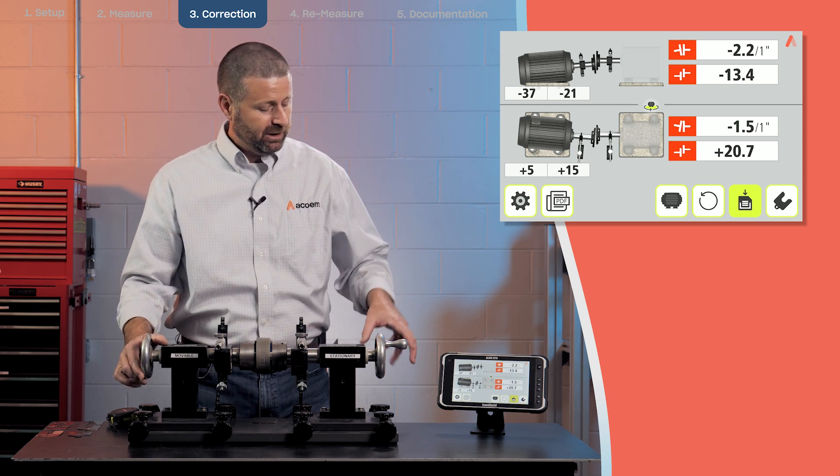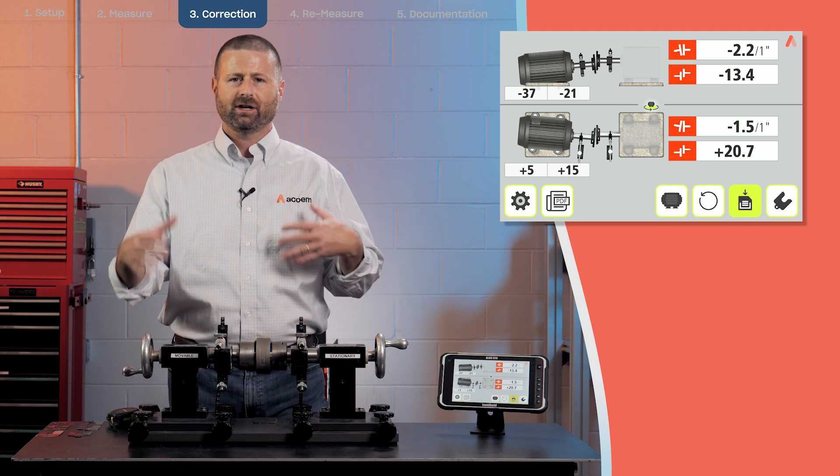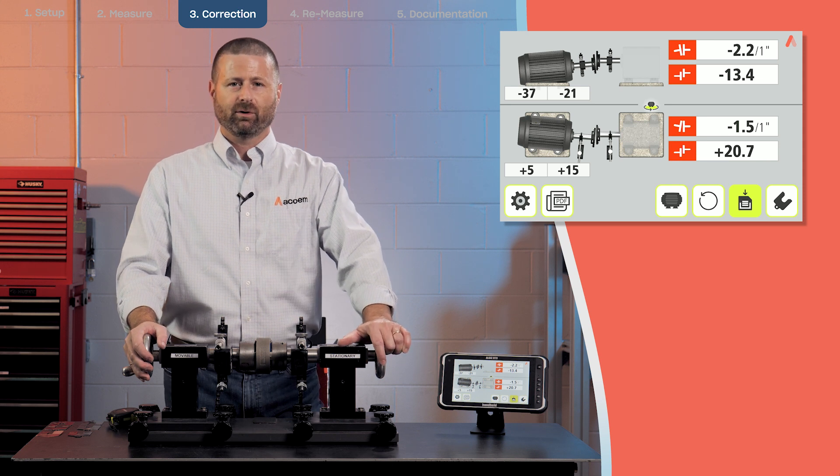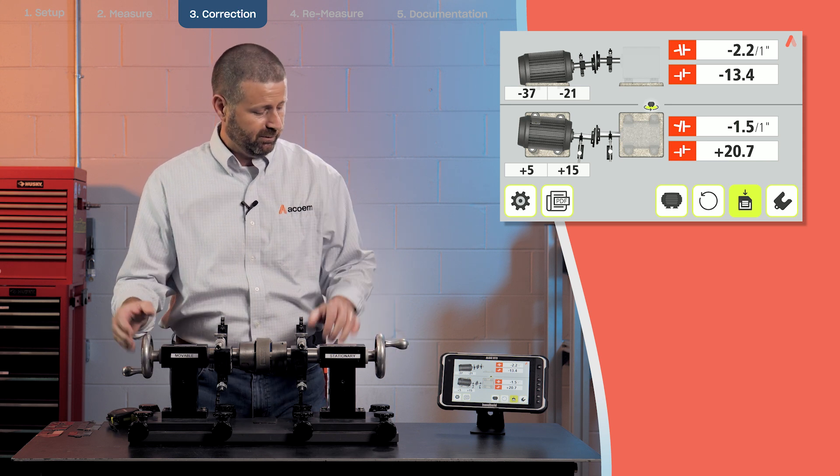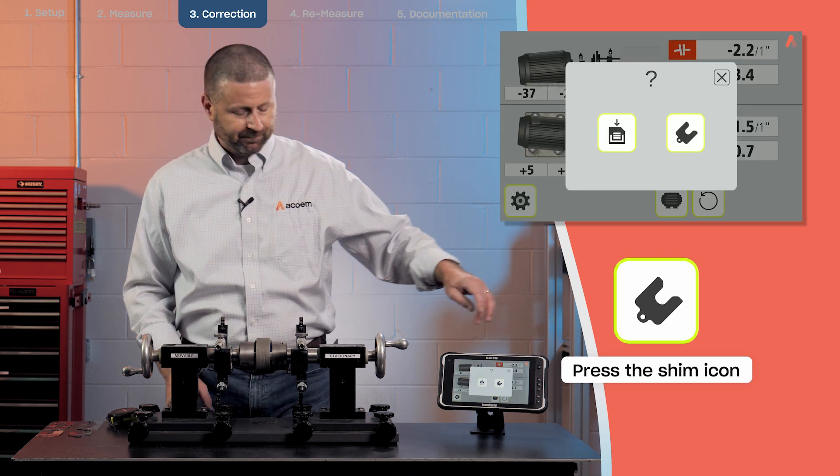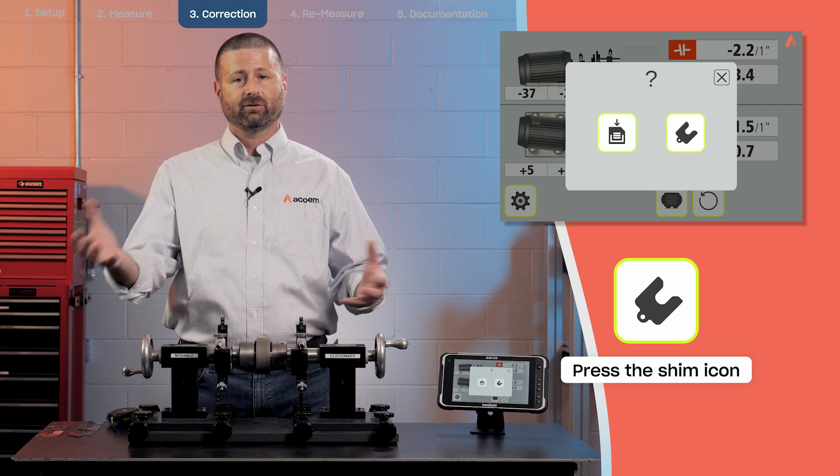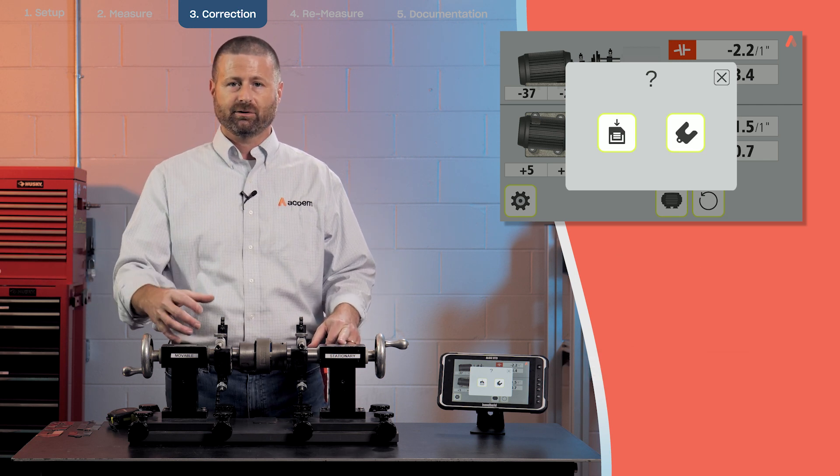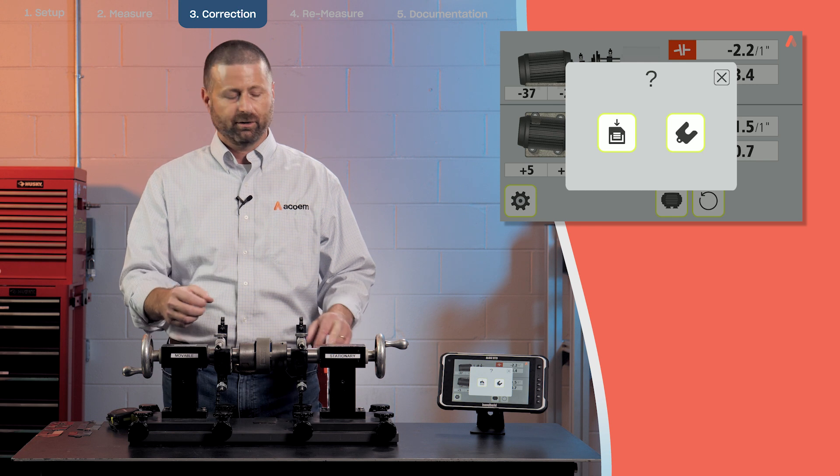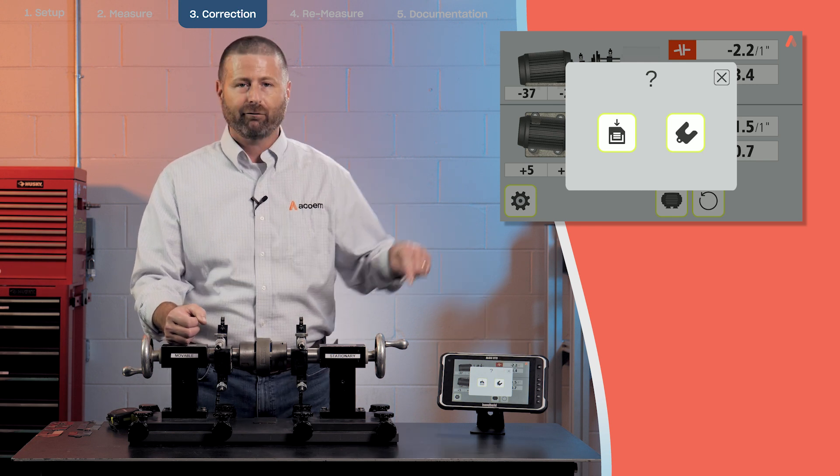At this point you see some positive numbers and some negative numbers. You'll see in the next step exactly what that's going to mean in terms of where we move the machine. So next I'm going to hit my shim icon because shimming is generally done first. My vertical adjustment is done first and horizontal adjustment is done second. That's why we call it vertizontal.